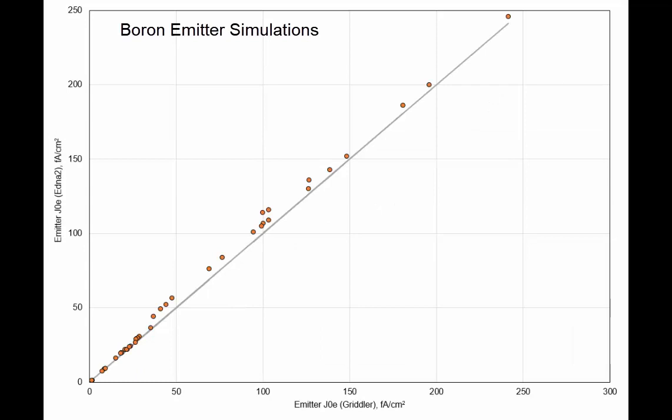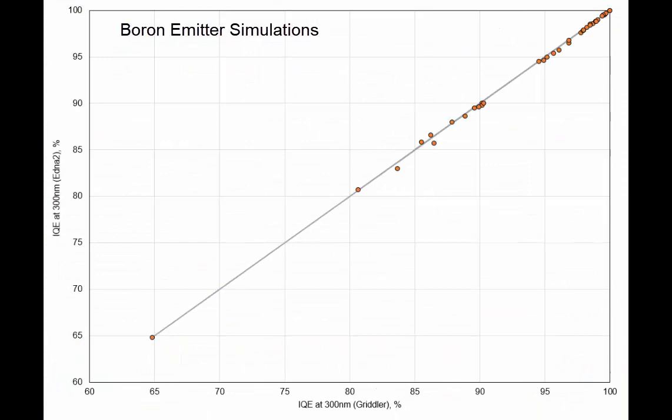For the emitter J0E, agreement is good. There is some slightly higher numbers reported by Aetna, but generally the agreement is good to within 7% on average.